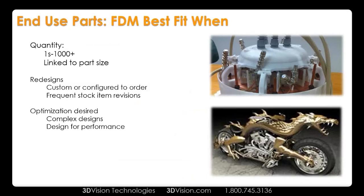On the right-hand side we have that Dragon Head — if you remember seeing it earlier. Anyone watch Orange County Choppers on Discovery? They have one of our 3D printers. This Dragon Head was printed in Ultem. They had no other way to make it fast enough with enough detail to get the motorcycle done — a very, very cool-looking bike.